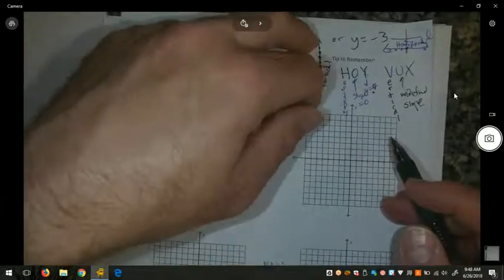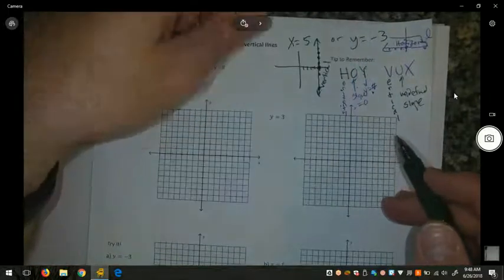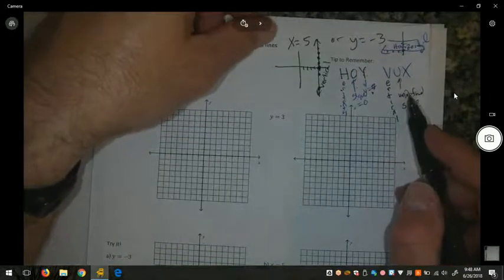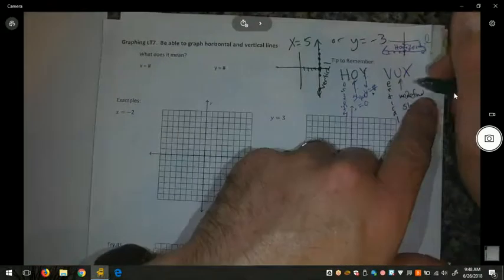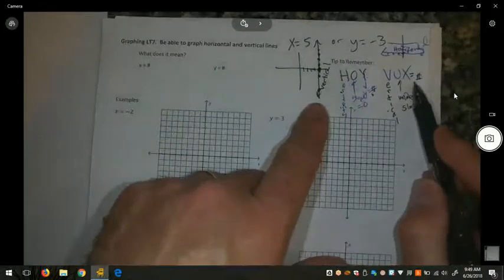With a 0 in the denominator. And if you have a 0 in the denominator, the number is undefined. And it's an x equals a number equation.